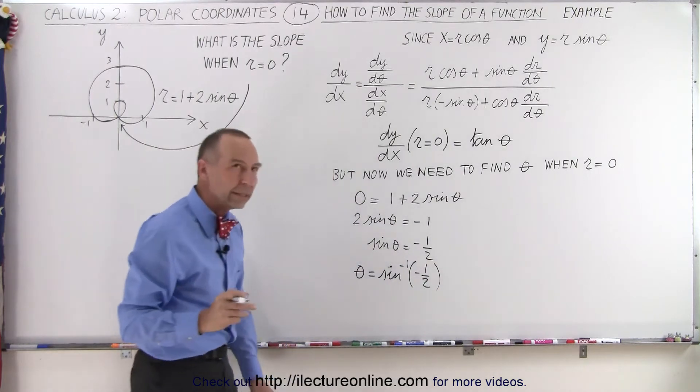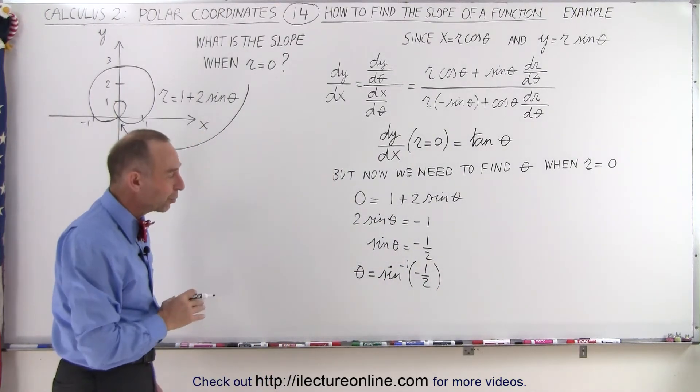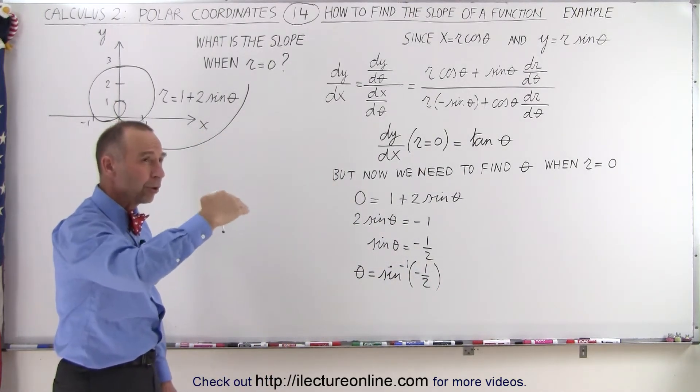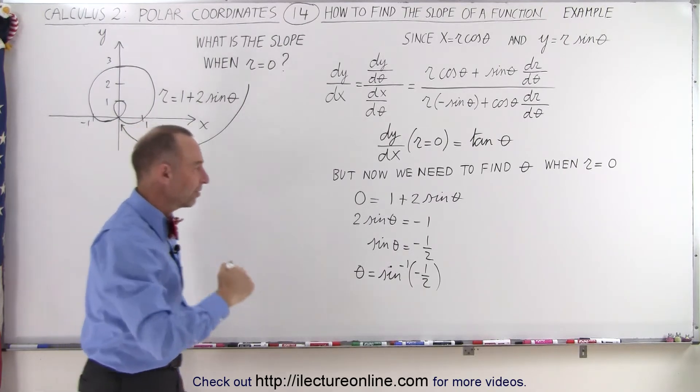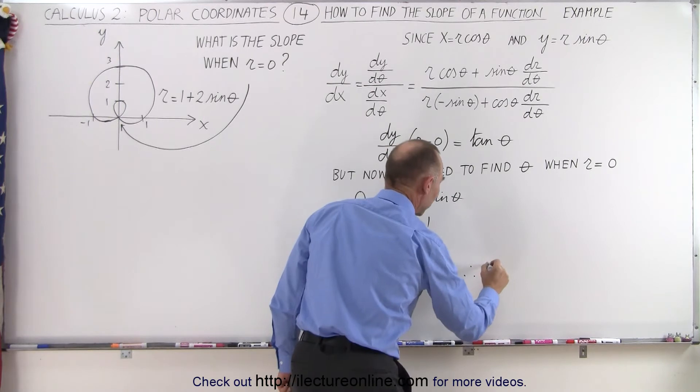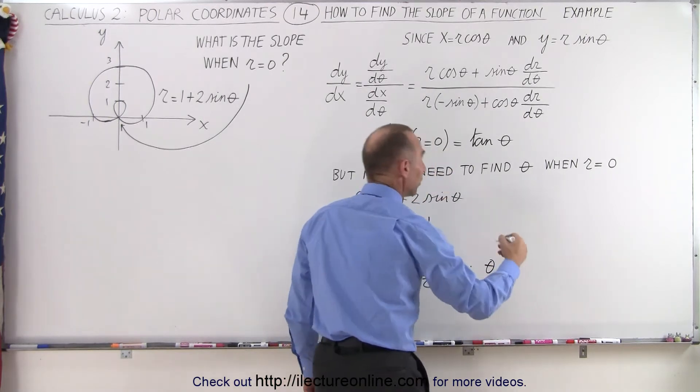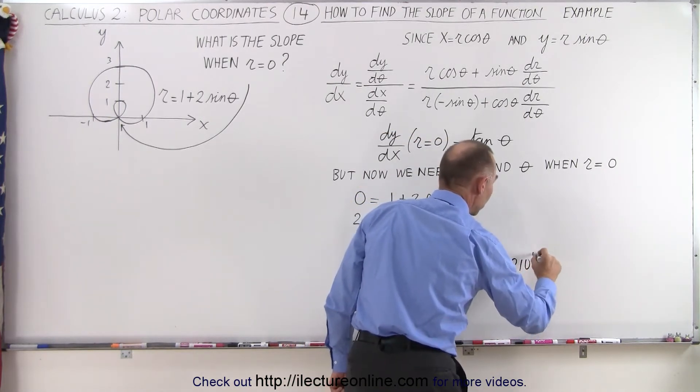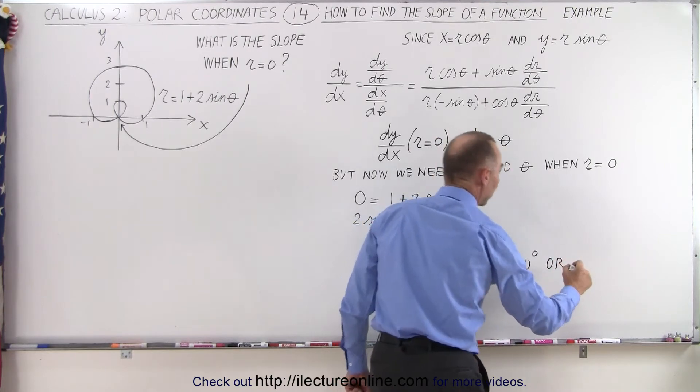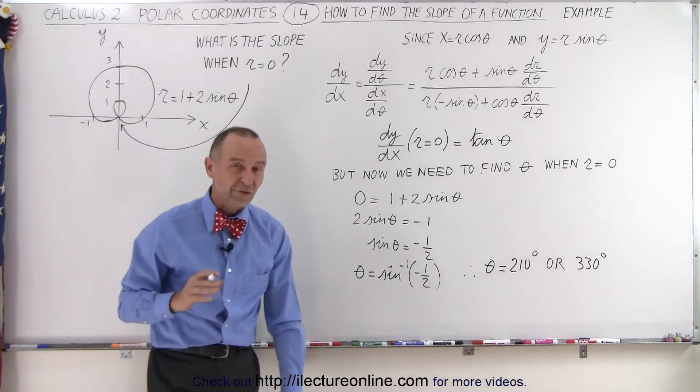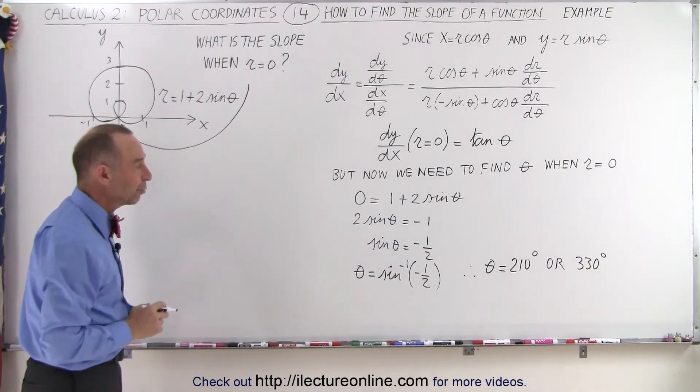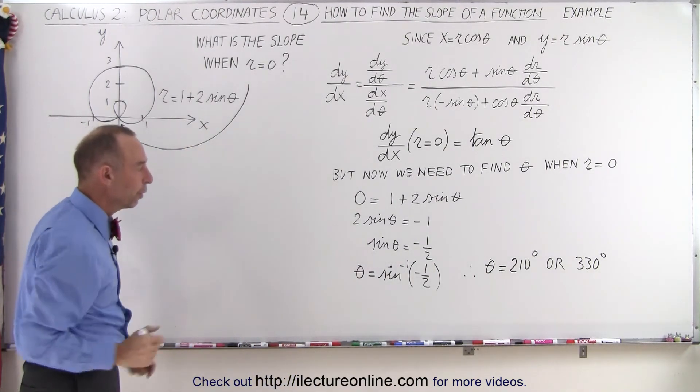So at what point is the sine of theta equal to minus 1 half? Well, that would be 30 degrees past 180 and 30 degrees before 360. In other words, that means that theta is equal to 210 degrees, or it can also happen at 330 degrees. Those are the two angles for which the sine of theta will equal negative 1 half, which is in quadrant 3 and 4.